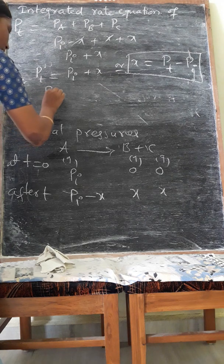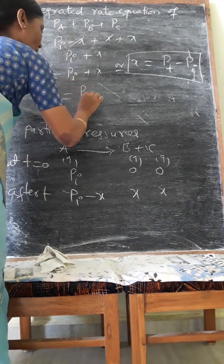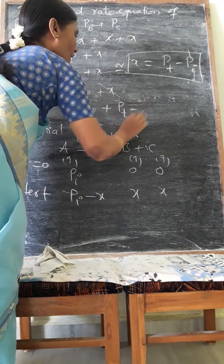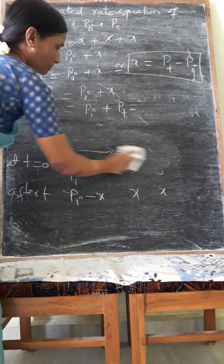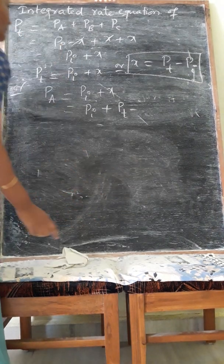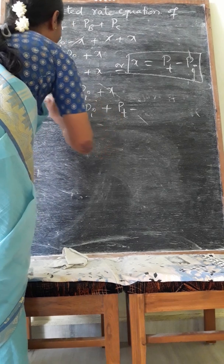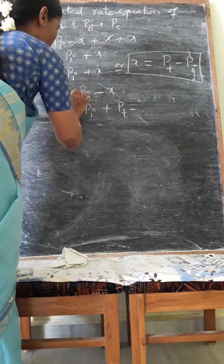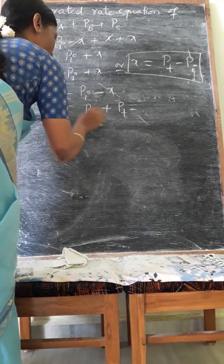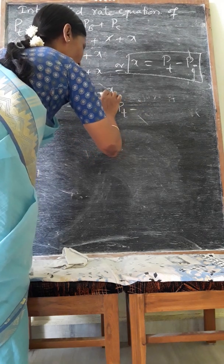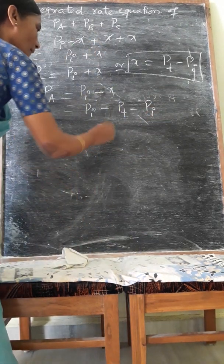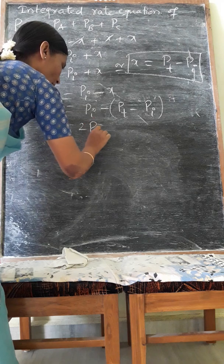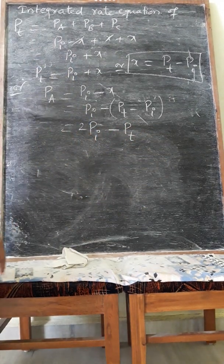From PT equals PI plus X, we get X equals PT minus PI. Now, PA equals PI minus X. Substituting X: PA equals PI minus (PT minus PI), which simplifies to 2PI minus PT. So the value of PA is 2PI minus PT.